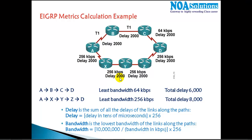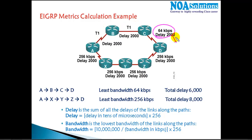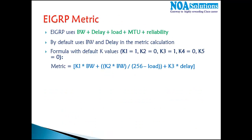To summarize: for bandwidth, EIGRP uses the least bandwidth on the path in the formula; for delay, it sums all delays across the path. This is theoretically useful for exams and interviews, but practically the router performs all these calculations automatically. What matters for us is the resulting cost value — the route with the least cost is selected as the best route by the EIGRP process.